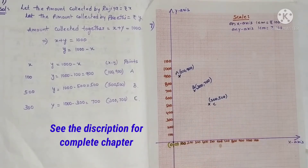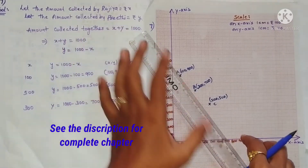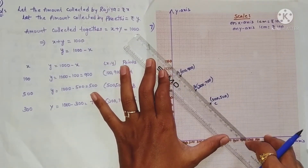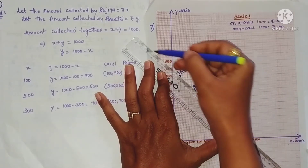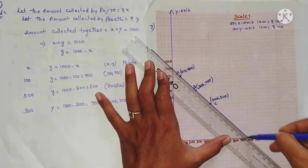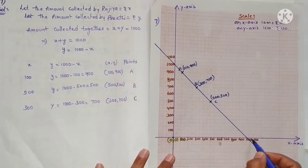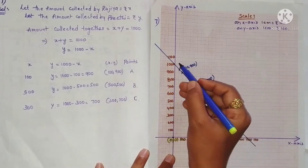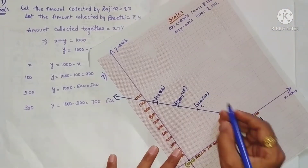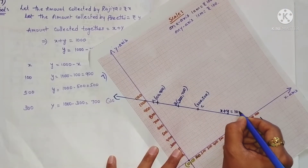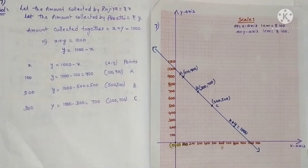Now just take the scale and join these three points. The line cuts the X-axis at 1000 and the Y-axis also exactly at 1000. Write the line name: X plus Y equals 1000. This is the graph of the equation.